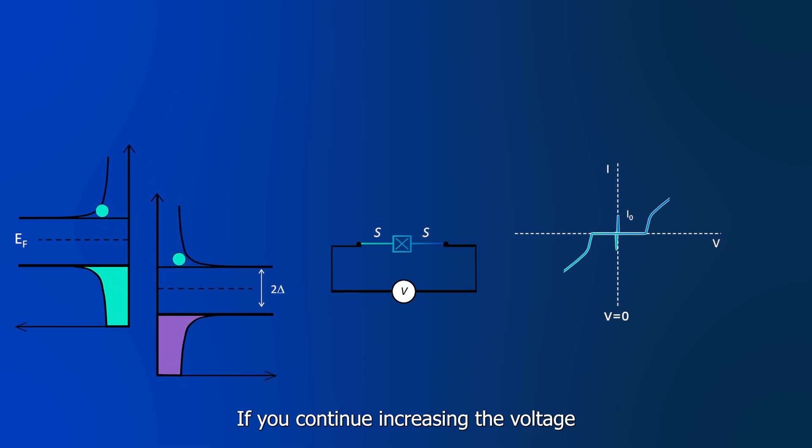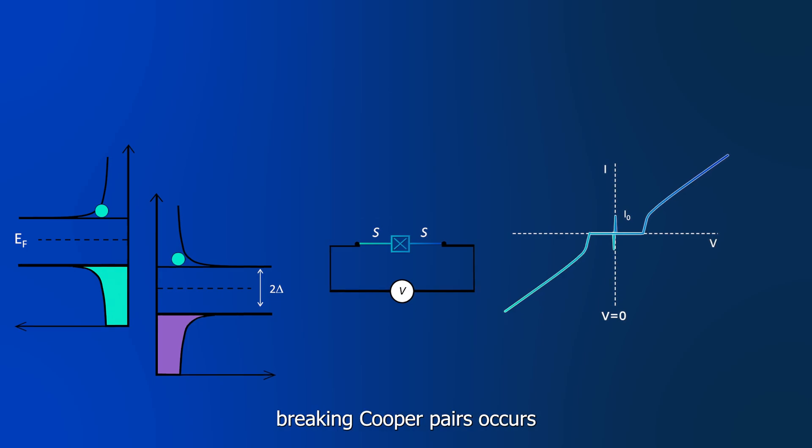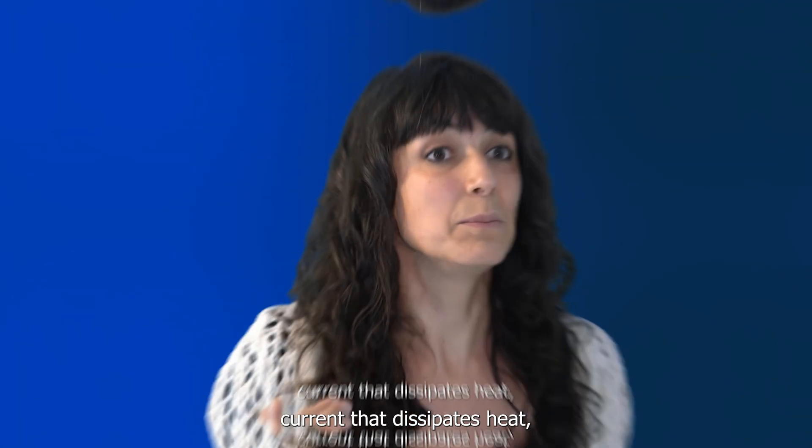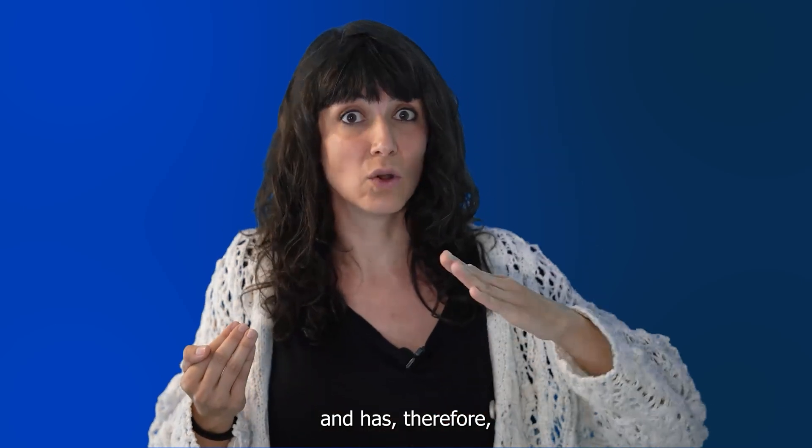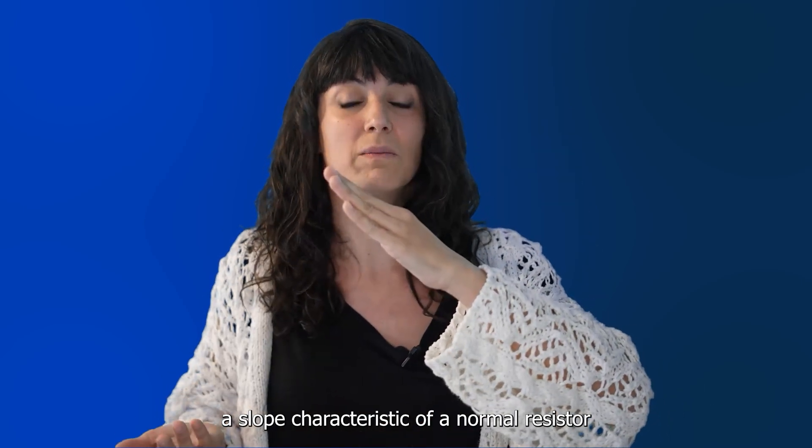If you continue increasing the voltage, you will arrive to the point at which breaking of Cooper pairs occurs, and tunneling of quasiparticles is allowed, yielding the observation of a net DC current that dissipates heat and has therefore a slope characteristic of a normal metal resistor.